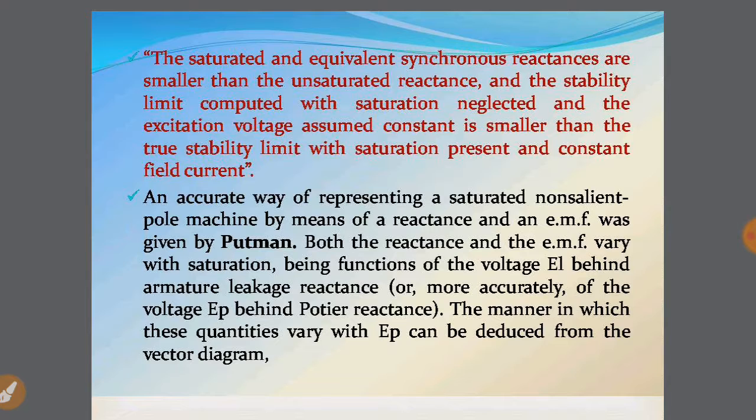So the most possible way for representing this saturated non-salient pole machine will be by the means of a reactance and an EMF, which we have seen already in the circuit diagrams, and this was given by Puttman. Both the reactance and the EMF vary with saturation, being functions of the voltage EP behind armature leakage reactance, or equivalently, of the voltage EP behind Potier reactance. The manner in which these quantities vary with EP can be deduced from the vector diagram.